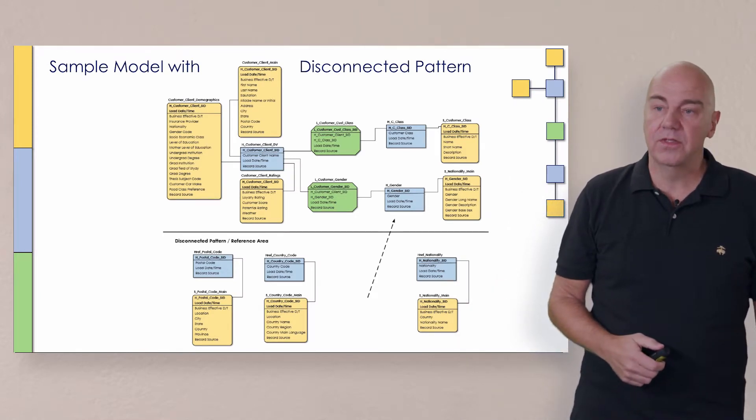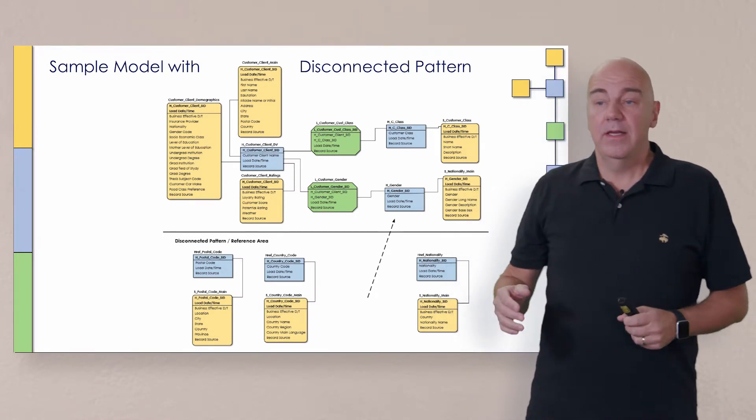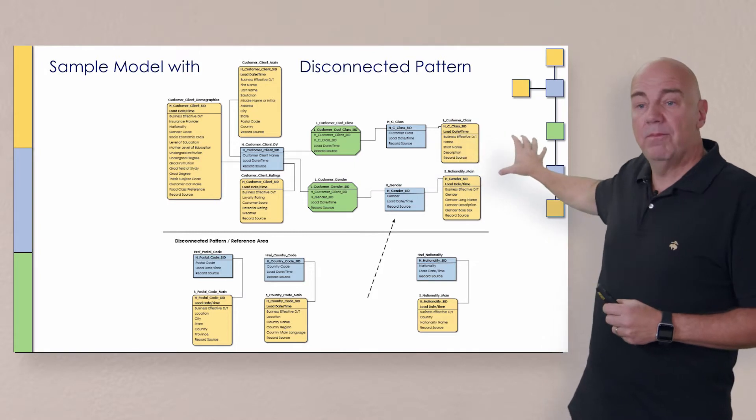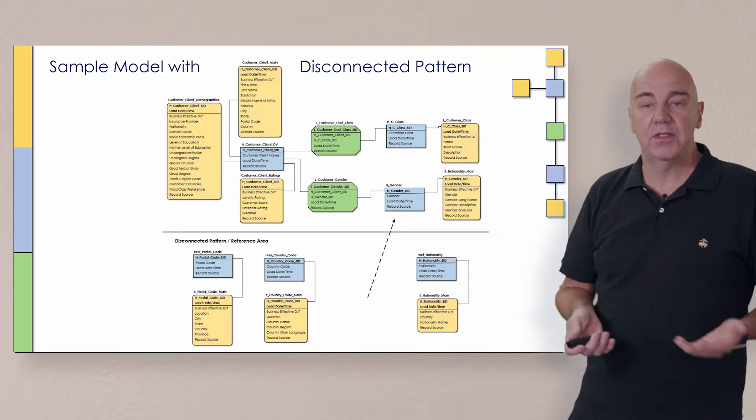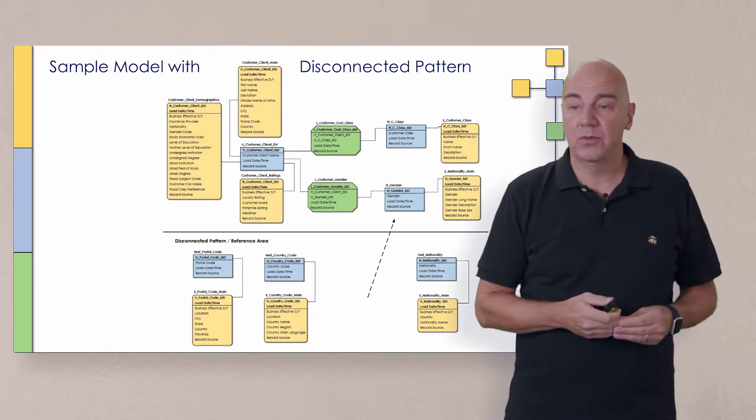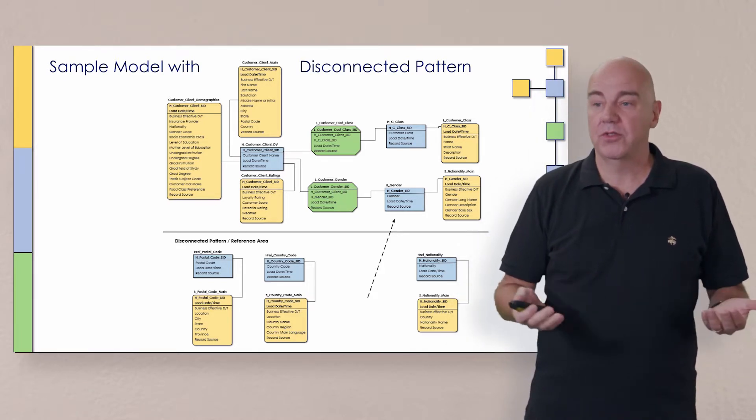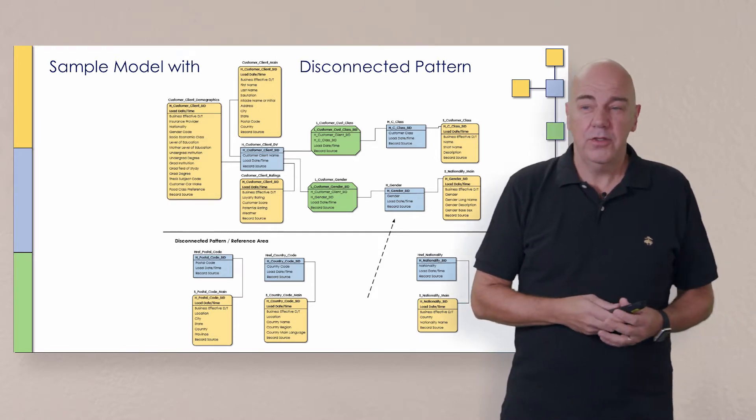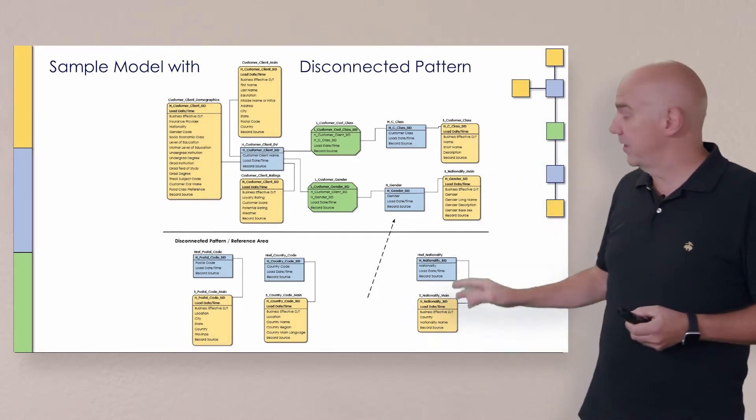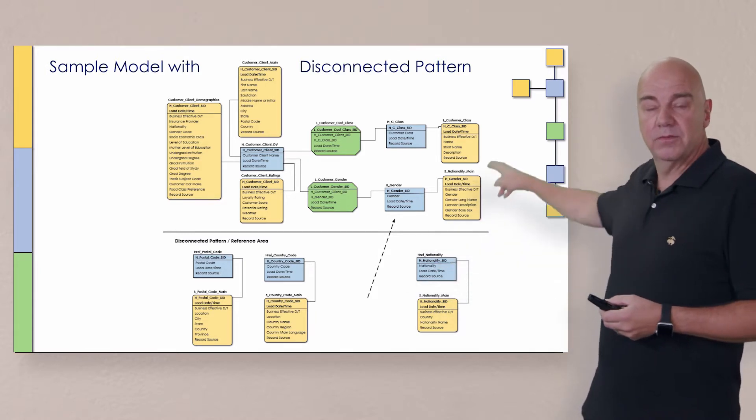So here's a broader picture you can see, a broader picture that shows here's a core model at the top. And then below it are some of the reference style disconnected pattern type tables. Now in this case, we're using country code and postal code. Nationality, just a couple examples.